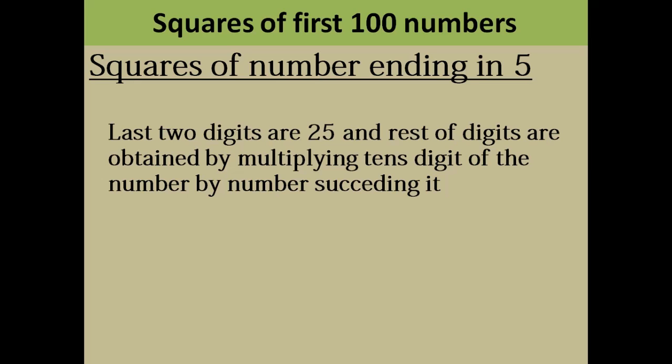The rest of the digits are obtained by multiplying the tens digit of the number by the number succeeding it. The last two digits of every number that ends in 5 is 25. The rest of the digits, let's see it by an example. Suppose you have to find the square of 25.